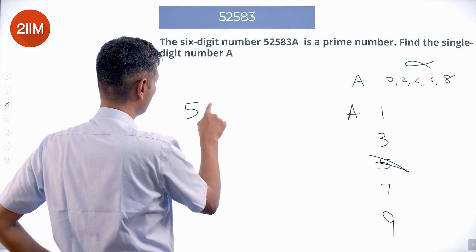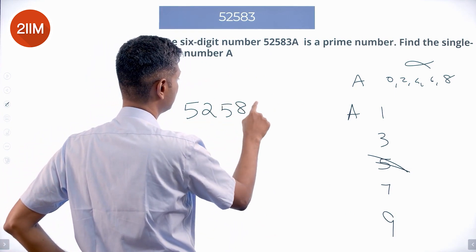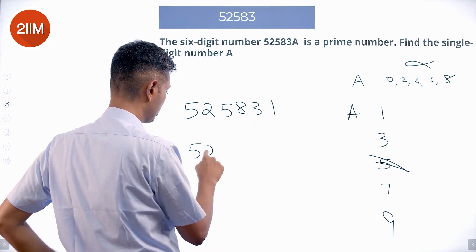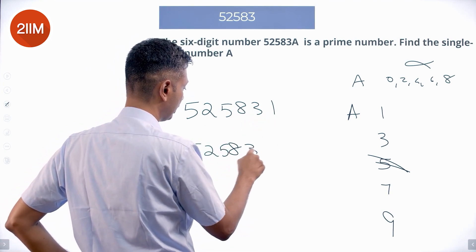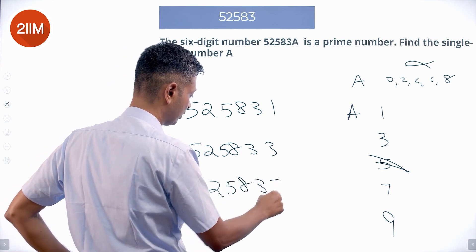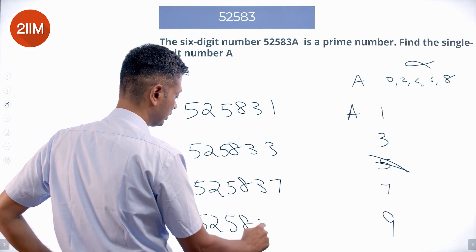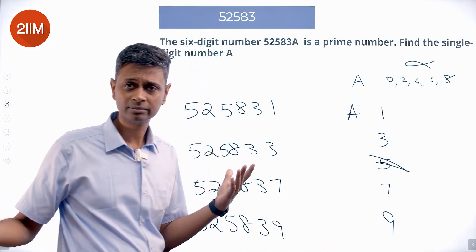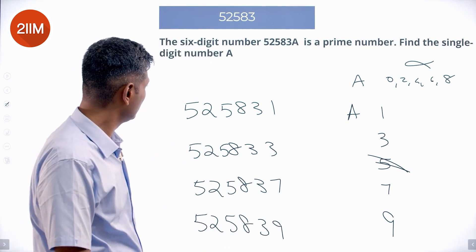So all I have to say is this number could be 525831, 525833, 525837, or 525839. One of these should work—one of these should be prime.